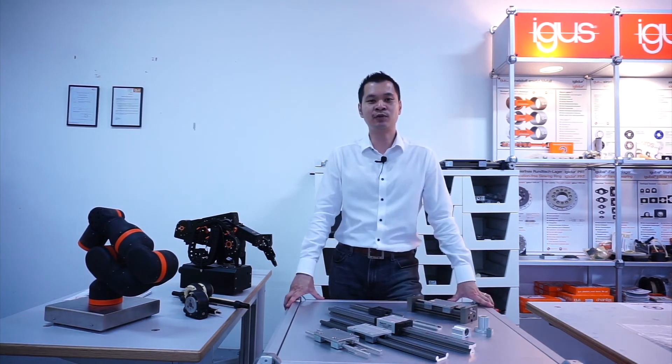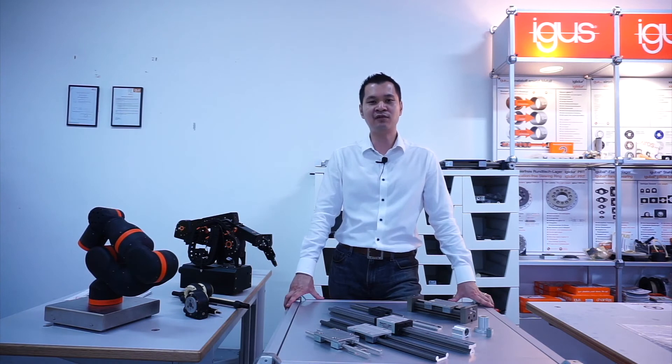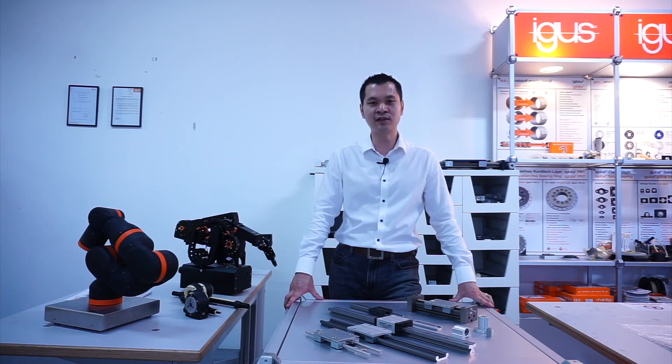IGUS is committed to produce over 100 new products every year. If you would like to know further about our new products, you can scan the QR code to access our online exhibition. If you would like to know more information, please contact our local IGUS sales staff and they will be glad to advise you on any matters. With that, thank you very much for your attention.